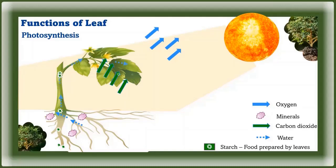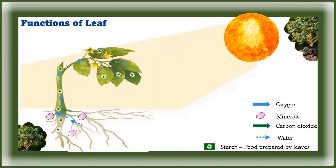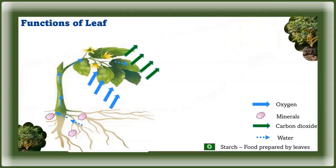During photosynthesis, leaves give out a gas called oxygen, which is breathed in by all living things. The food goes to all parts of the plant through the stem. Part of the food made by the leaves is used by the plant to grow; the remaining part is stored in seeds, stems, roots, fruits, or leaves. Plants do not make food at night — instead, they breathe in oxygen and breathe out carbon dioxide during the night.